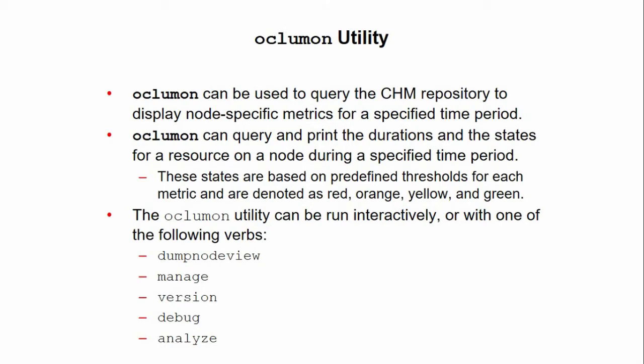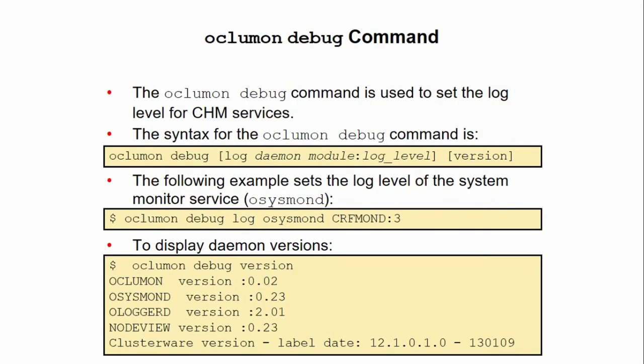Additional administrative tasks include changing the metric database size. The OCLUMON utility can be run interactively or with one of the following commands: dub, node, view, manage, version, analyze, and debug.